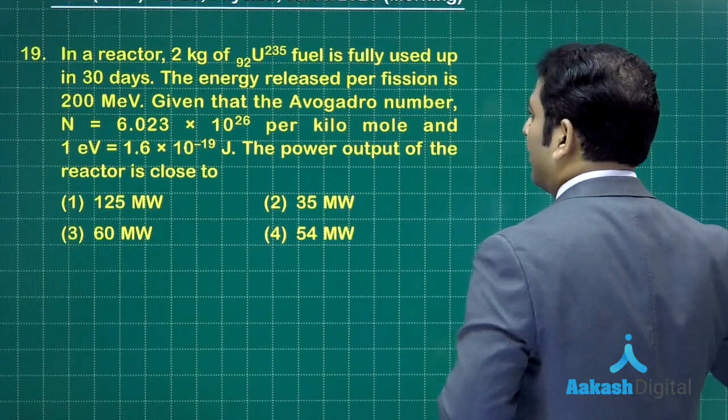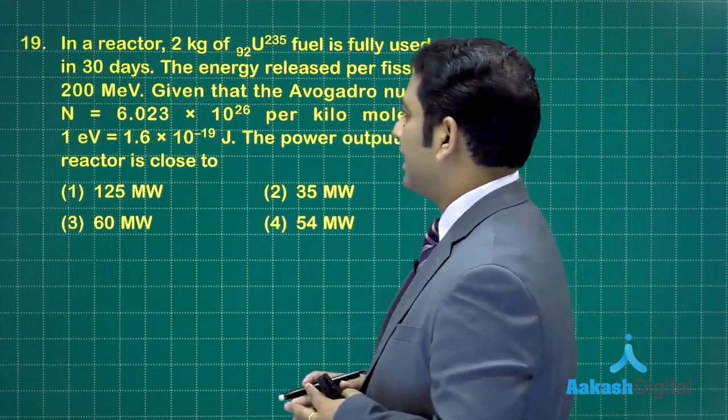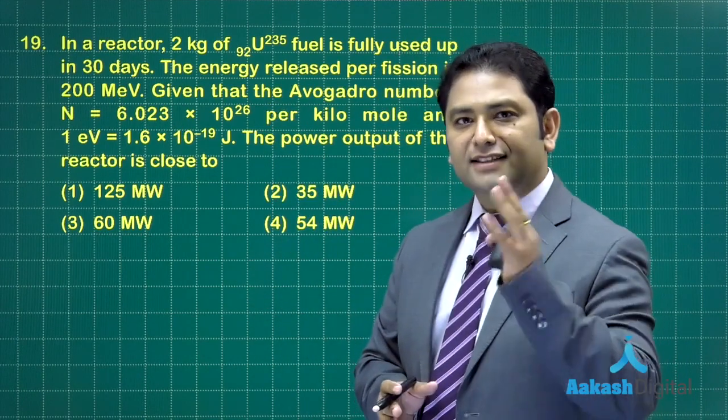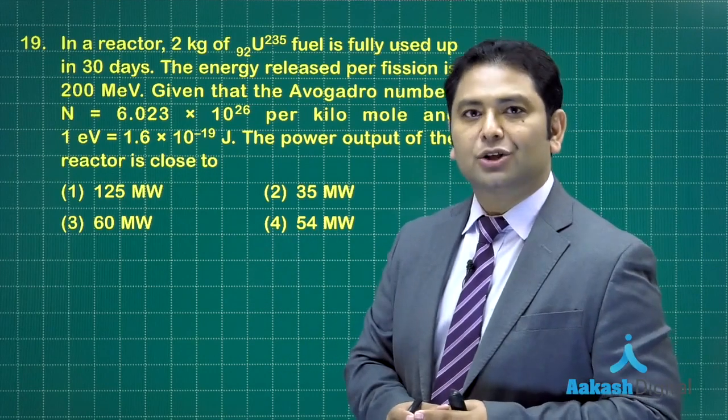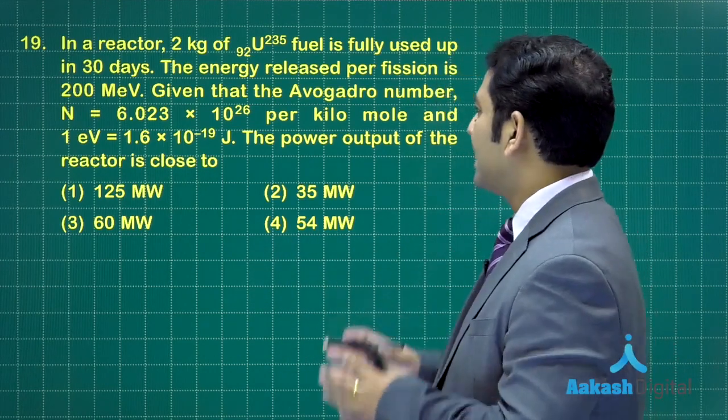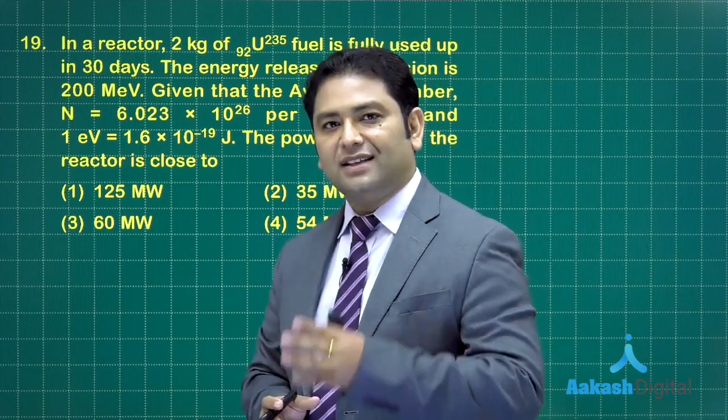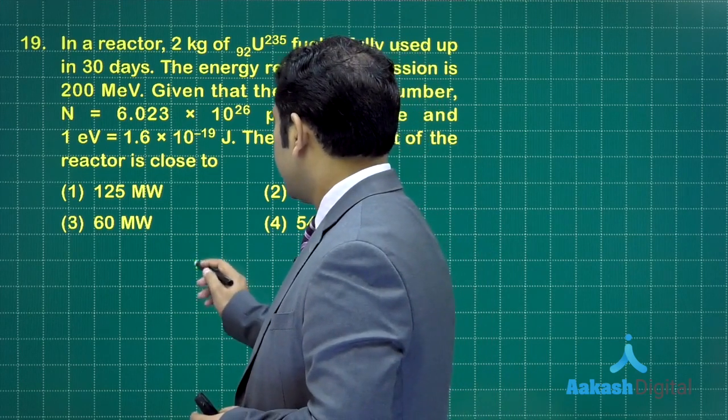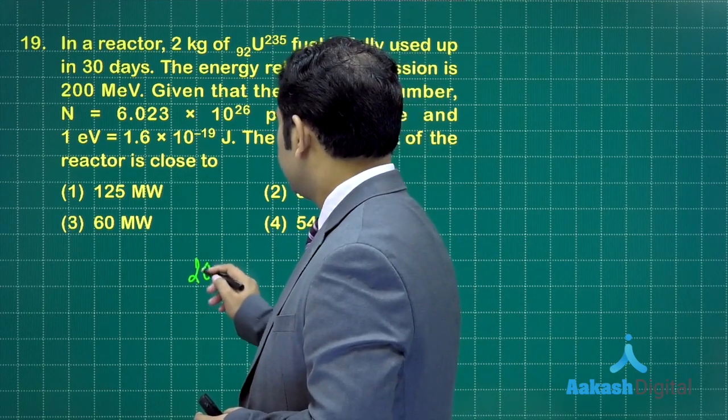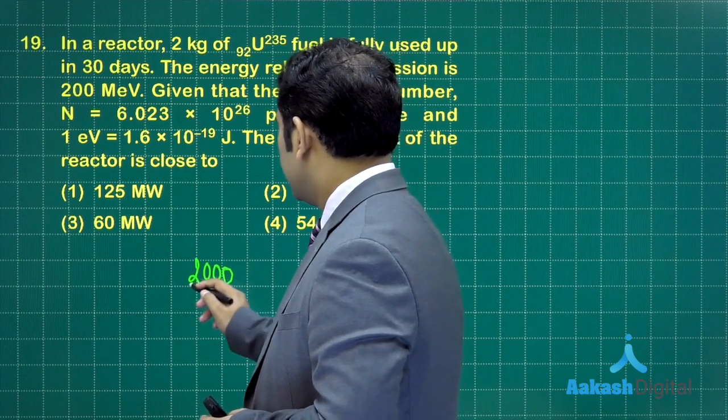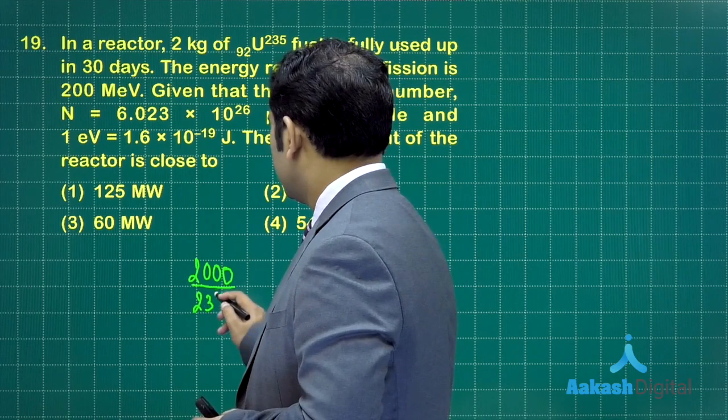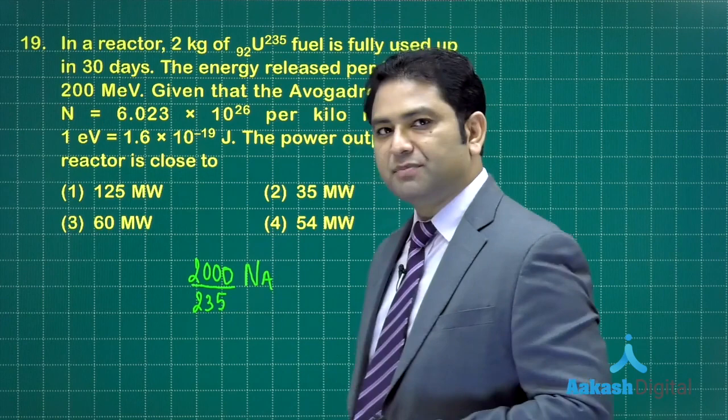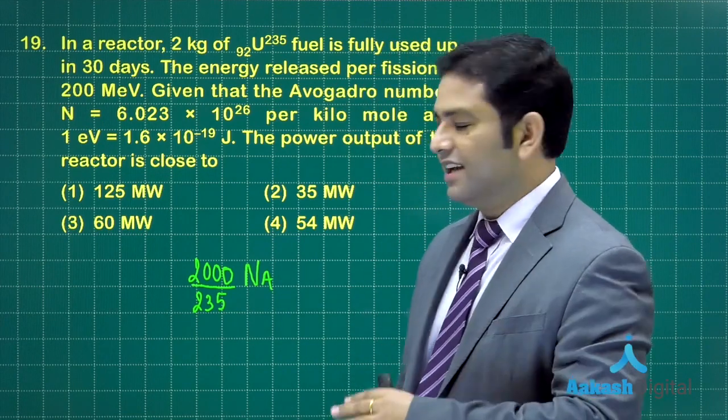Power of course would be the total energy divided by time. The time is 30 days. Let's calculate how much is the total energy for that 2 kg of uranium. To find the number of molecules: 2 kg is 2000 grams divided by 235, which gives the number of moles multiplied by Avogadro's number to get the number of atoms.